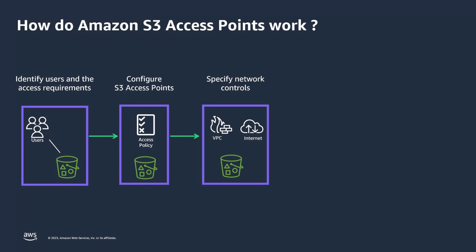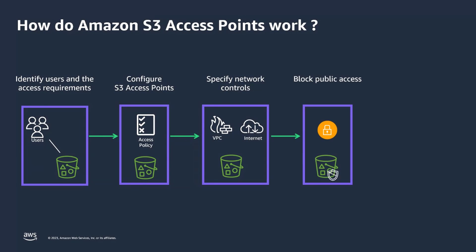Next, we choose network controls. Do you want to make the access point accessible from the internet or restrict requests made through that access point to originate from a specific virtual private cloud? Next, block public access. Similar to buckets, Amazon S3 Access Points support independent block public access settings for each access point. For any request made through an access point, S3 evaluates the block public access settings for that access point, the underlying bucket, and the bucket owner's account. If any of these settings indicate that the request should be blocked, Amazon S3 rejects the request.